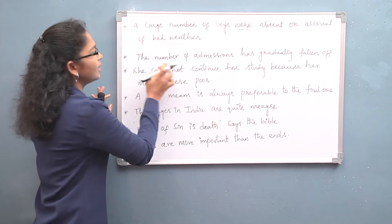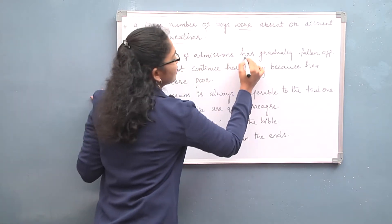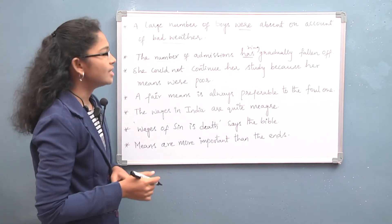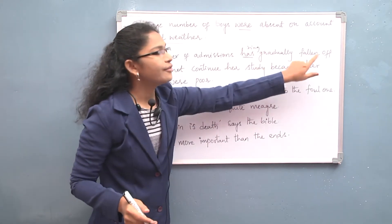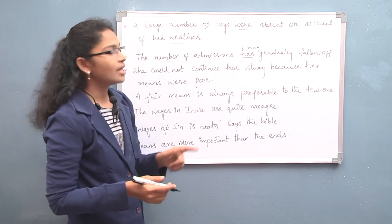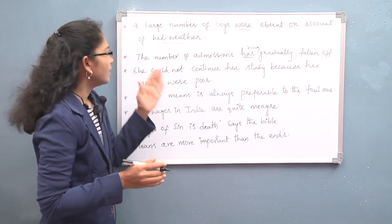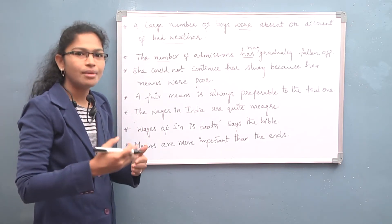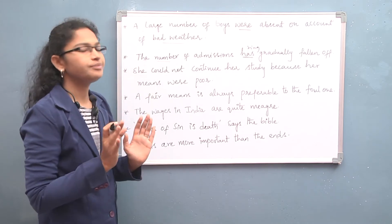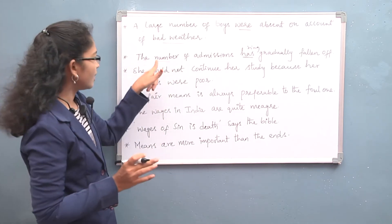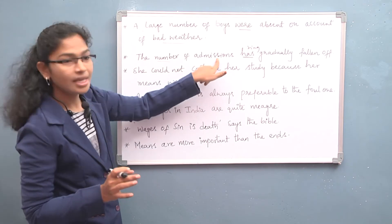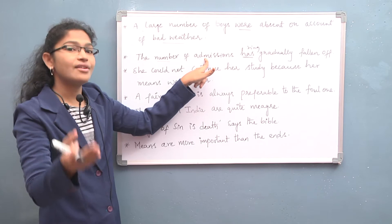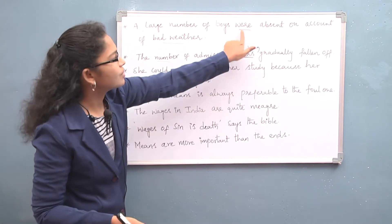However: 'The number of admissions has gradually fallen off.' Here we use the singular 'has'. Even though 'admissions' is plural, the subject is 'the number of', which conveys a singular idea — the number is falling. The verb follows the meaning conveyed, not just the noun's number.